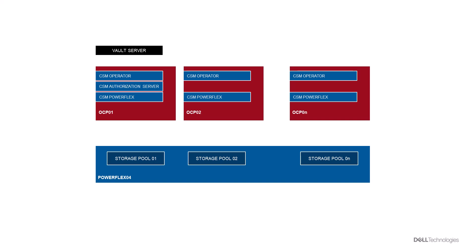We'll be deploying the CSM Authorization server onto the OCP01 OpenShift cluster. As the CSM Authorization server needs a Vault server to keep the storage credentials, we'll also be deploying a HashiCorp Vault server onto the OCP01 cluster.